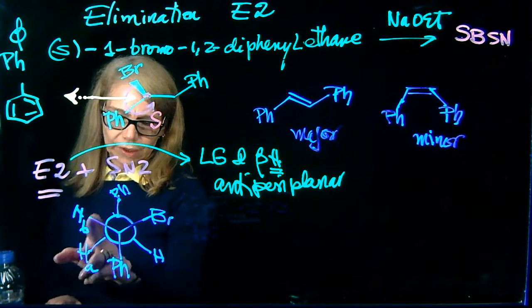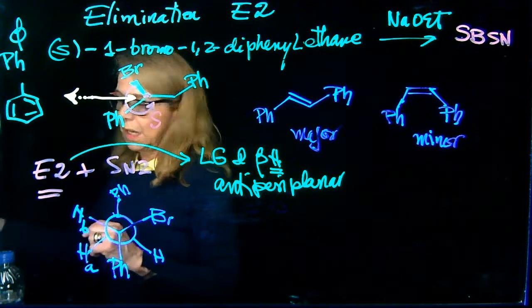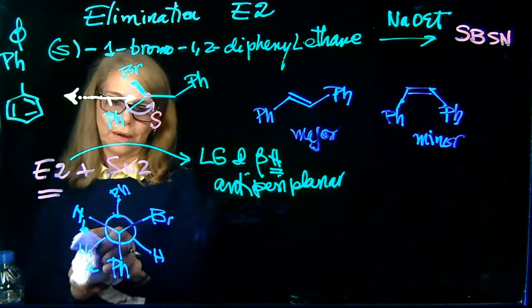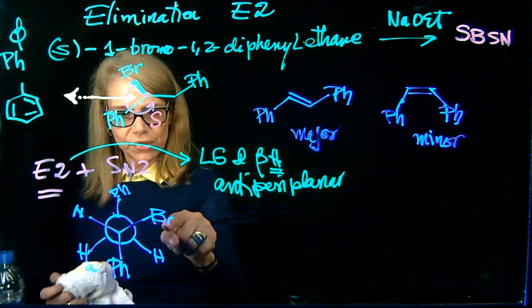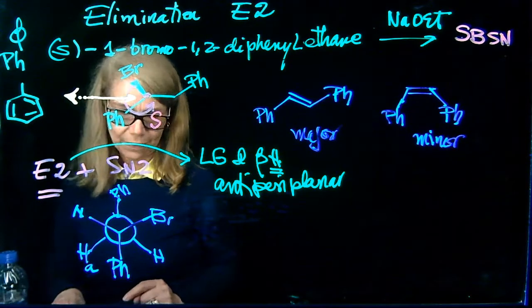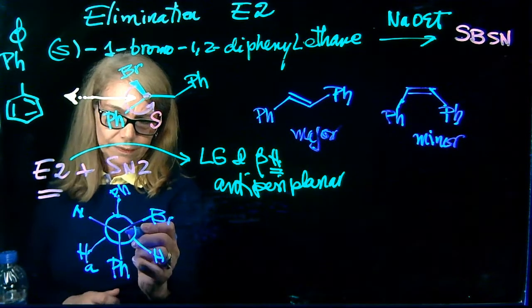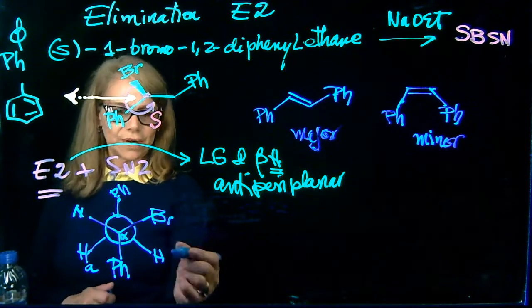What I need to label is the two hydrogens in the carbon in the back. Why? Because this is the one that is going to do the elimination with the bromine, which is, this is my alpha carbon in the front, so the beta hydrogens are in the back.